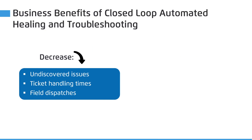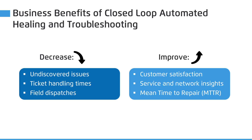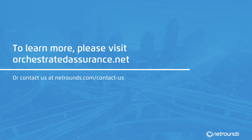The successful implementation of orchestrated assurance and closed-loop automated healing and troubleshooting also brings about a variety of concrete business benefits and operational savings. This solution decreases the number of undiscovered network issues and service downtime, reduces both the number of trouble tickets and ticket handling times, and greatly reduces the need for field dispatches. With orchestrated assurance, you will also see an improvement in customer satisfaction, improved service and network insights, as well as mean time to repair for any network issues. To learn more, please visit orchestratedassurance.net or contact us via the NetRounds website.